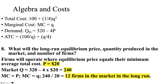For the long-run equilibrium, we need to determine the price, quantity produced in the market, and the number of firms. The long-run equilibrium price is 20 — from our prior result that minimum ATC is at quantity 20. Market quantity equals 320 minus 4 times 20, giving 240. Since marginal cost equals price and marginal cost equals quantity, we divide the market quantity 240 by the price of 20, giving us 12 firms in the market in the long run.